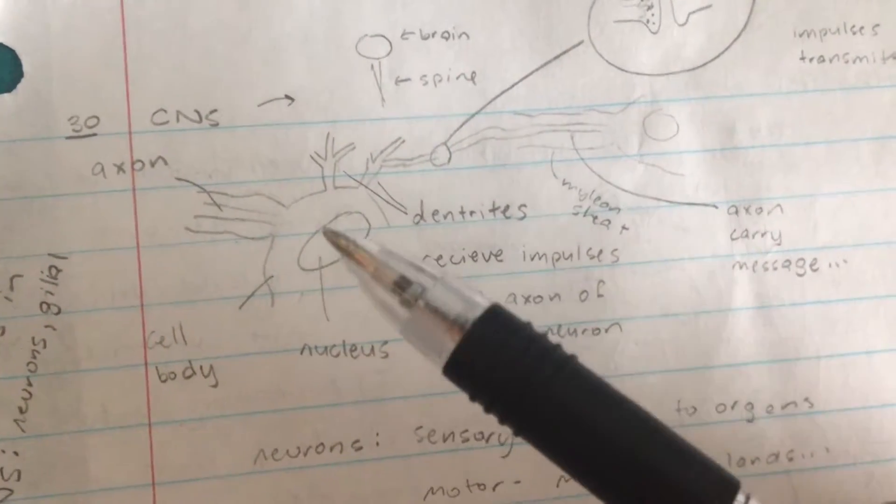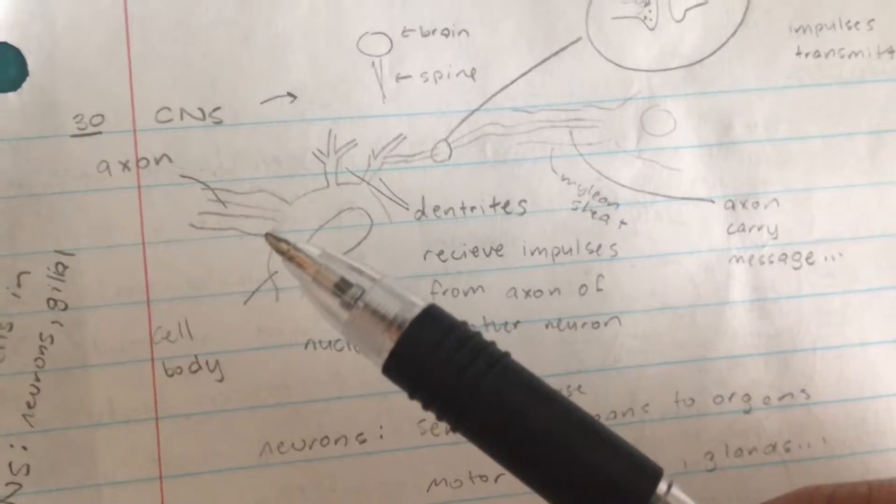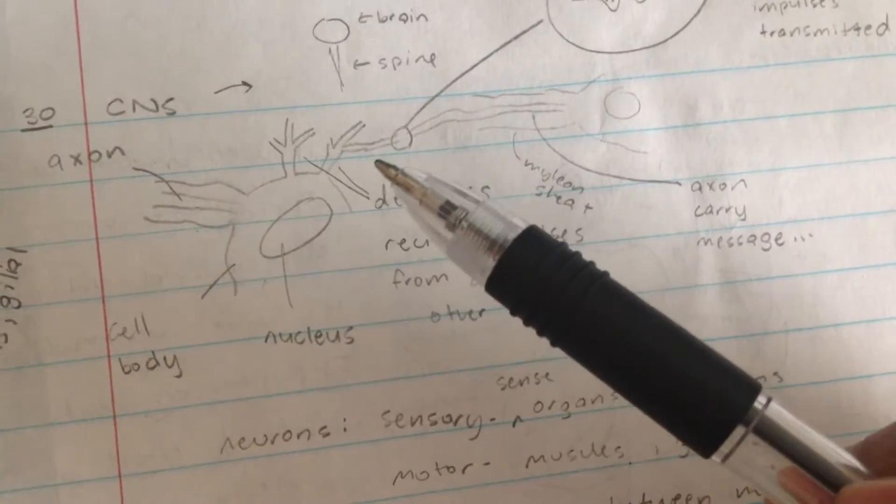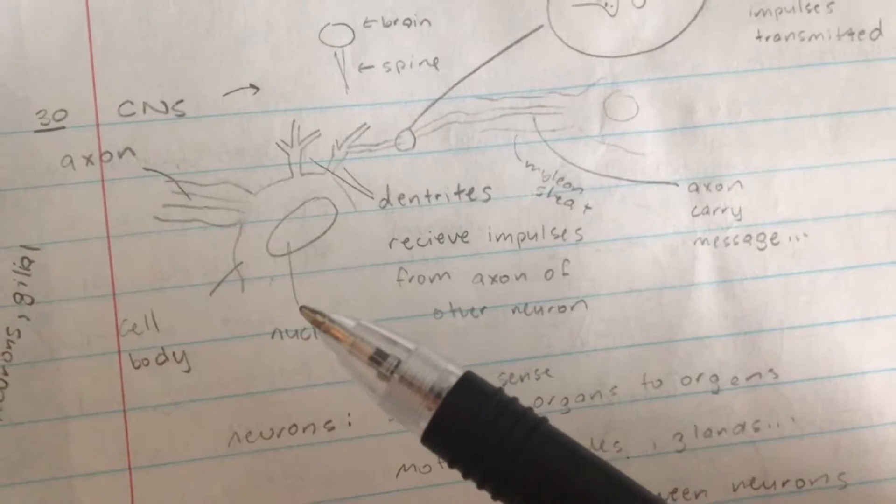The neuron uses the axon to send messages to other neurons, while they use dendrites to receive messages from other neurons.